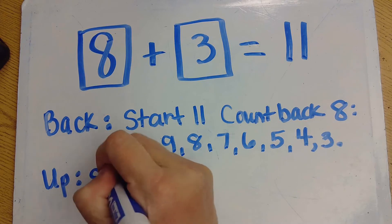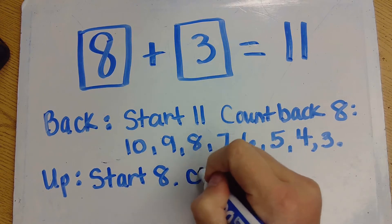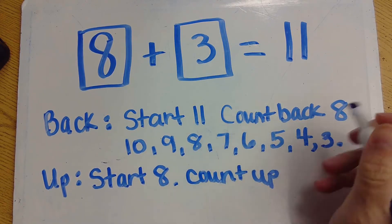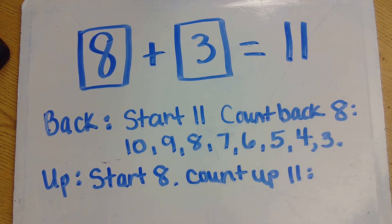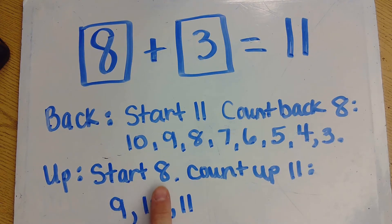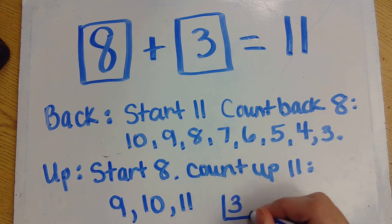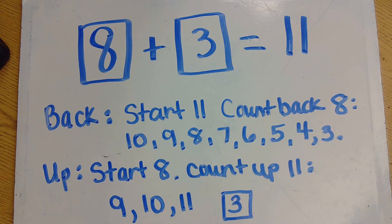If you used the counting up strategy, you start at 8 and you count up until you get to 11. So what would you say? You would say 9, 10, 11. For the counting up strategy, you probably started at 8 and counted up until you got to 11 — that would be 3 counts. So because I did 3 counts, my card must be a 3.